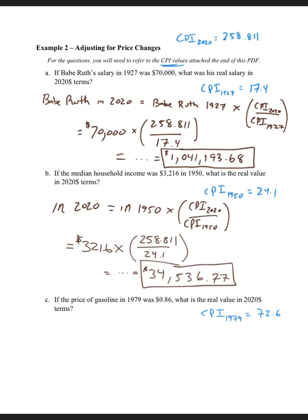Last but not least, the price of gasoline in 1979. What we want equals what we have, which is 86 cents, multiplied by the CPI of what we want, 258.811, divided by the CPI that we had, 72.6. We plug that into our calculator and get approximately $3.07.